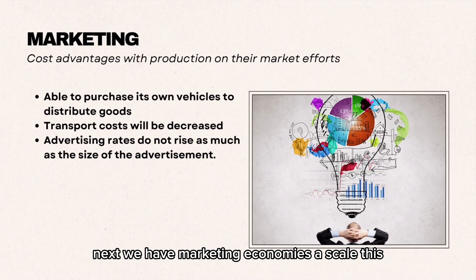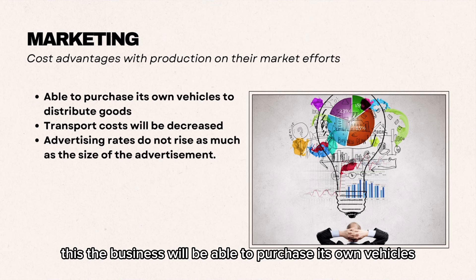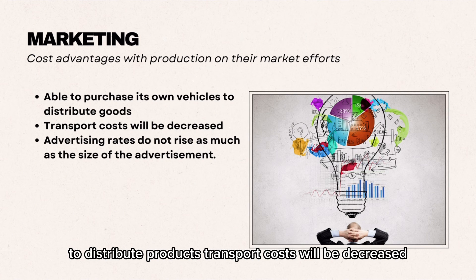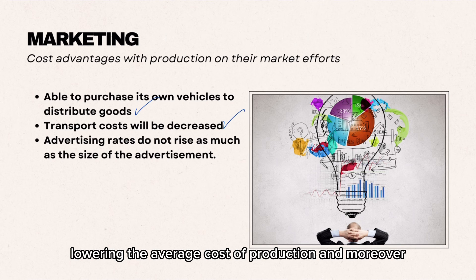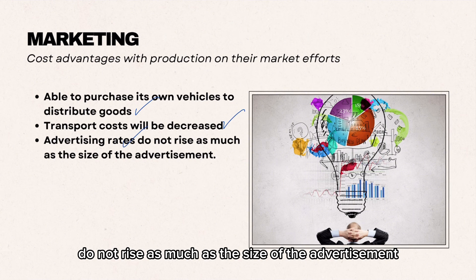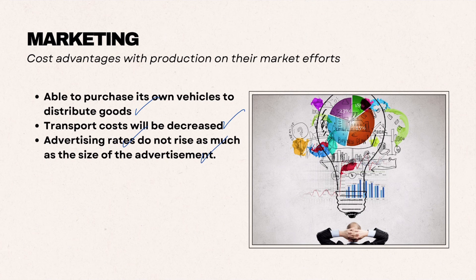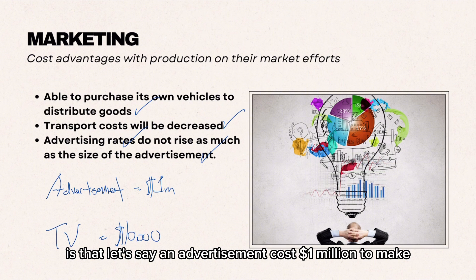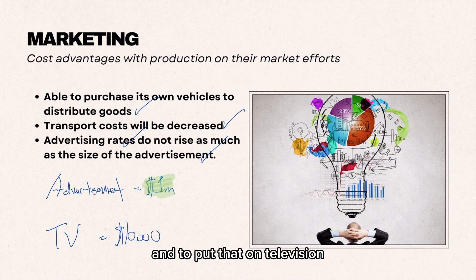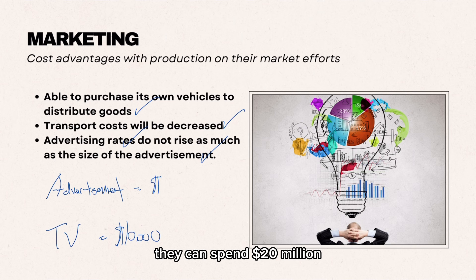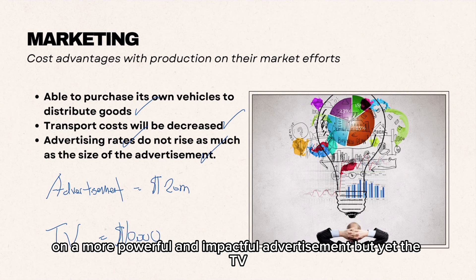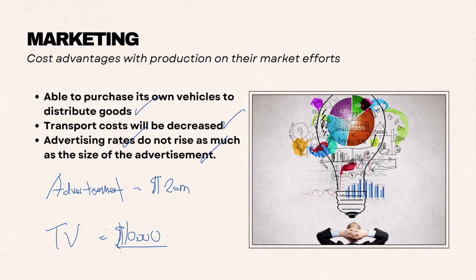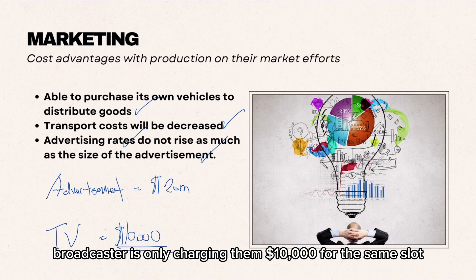Next we have marketing economies of scale — the cost advantages with production on their marketing efforts. The business will be able to purchase its own vehicles to distribute products, decreasing transport costs and lowering the average cost of production. Moreover, advertising rates do not rise as much as the size of the advertisement. For example, an advertisement might cost $1 million to make and $10,000 to air, but with marketing economies of scale they can spend $20 million on a more impactful advertisement, yet the TV broadcaster only charges them $10,000 for the same slot.